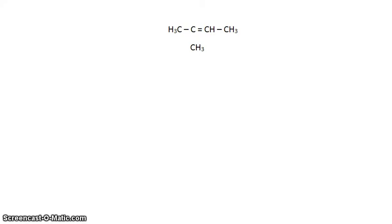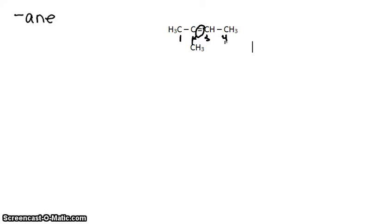So our first compound looks like this. We first have to find the longest chain of carbons — it's 1, 2, 3, 4. We know from before that that is a butyl chain. But this time it has a double bond. Single bonds are '-ane', but now double bonds are '-ene'. So instead of calling it butane, this one is called butene. But it also has a methyl group here.